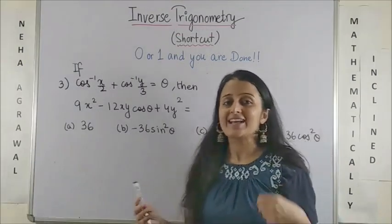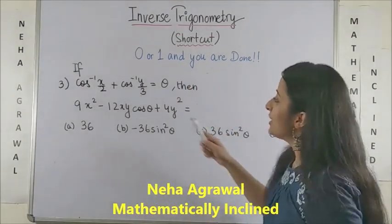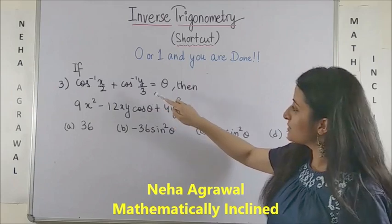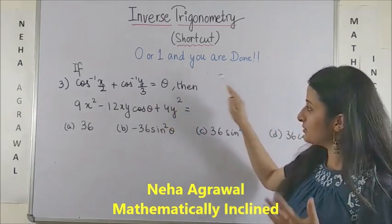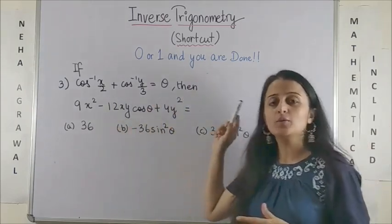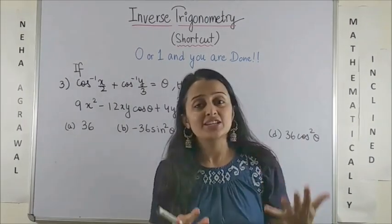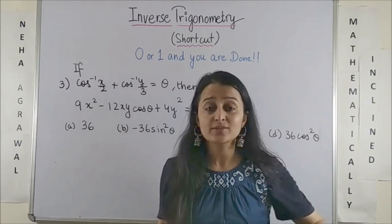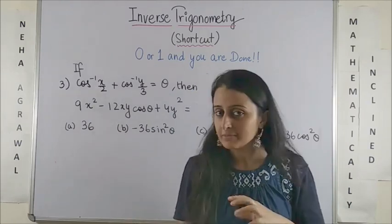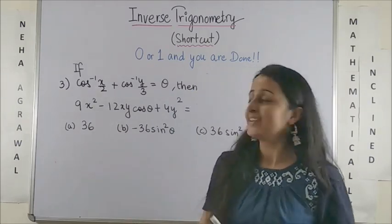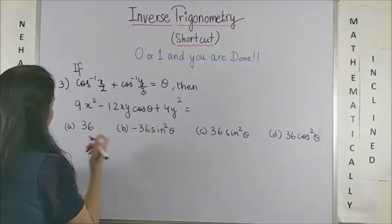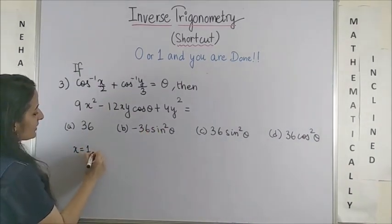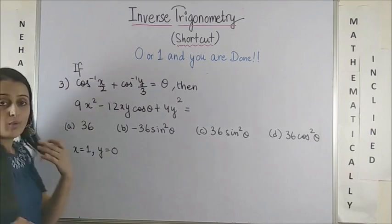Let's have a look at another similar question. You have cos inverse of x by 2 plus cos inverse of y by 3 equals theta. Then what would this expression look? Just like your previous question, you can take x as 1, y as 1 or you can try something else with 0 or 1. For instance, I tried taking x as 1 and y as 0.